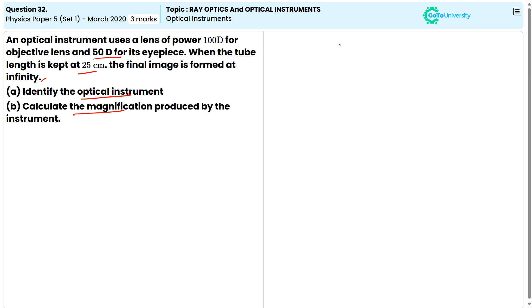So, from the given data, we can say that power of objective lens, P0, which is equal to 40D, and power of eyepiece lens, PE, which is equal to 50D, and the tube length, L, which is equal to 25cm, and the final image formed at infinity.